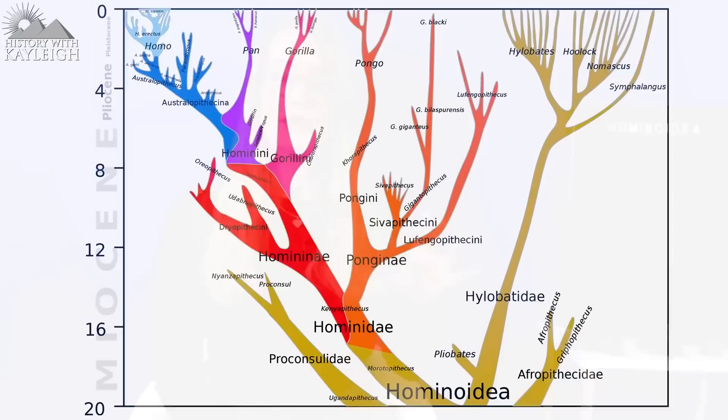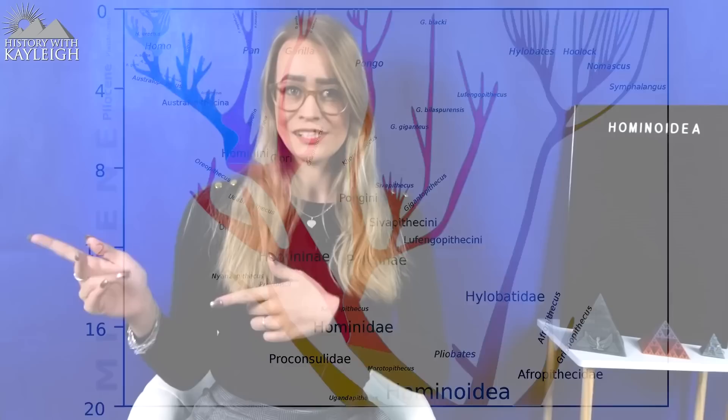About 20 million years ago there was a group of Hominoidea, which is a branch of old world apes. The Hominoidea then split from the Hylobatidae, which are the lesser apes — mostly the gibbons.